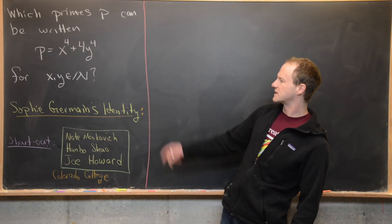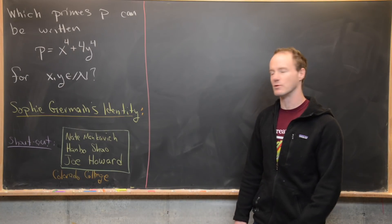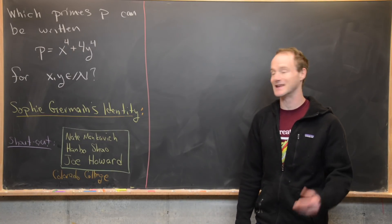I want to point out here that we're going to use something called Sophie Germain's identity. I won't write that here in case you want to try this problem without seeing the identity because it kind of gives it away.